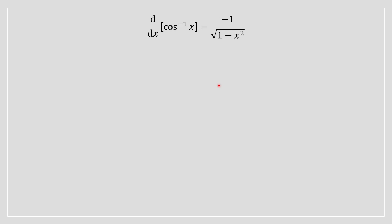So this is very similar to arc sine, taking the derivative of arc sine, proving it. So we're not going to be using the limit definition, instead we're going to be using implicit differentiation.